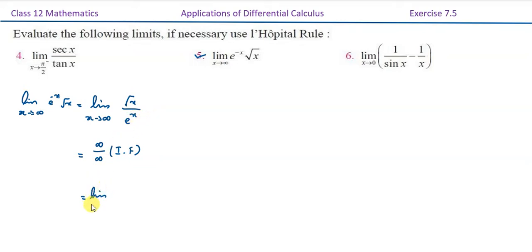So, limit x tends to infinity: the derivative of root x is 1 divided by 2 into root x, and the derivative of the denominator e^x is e^x.